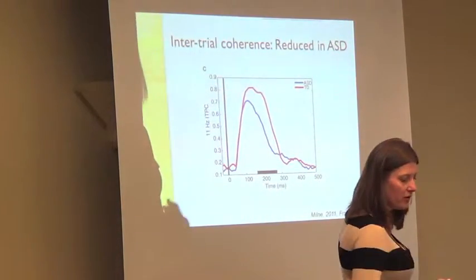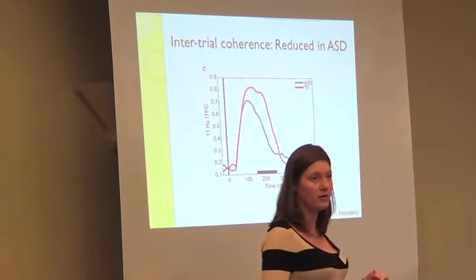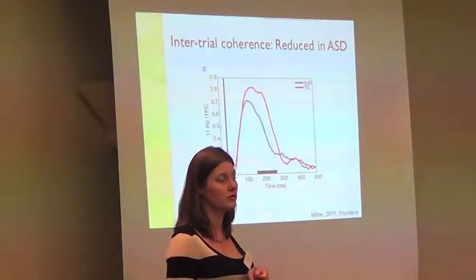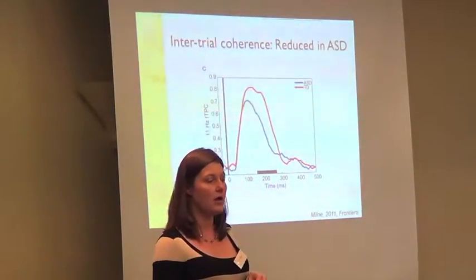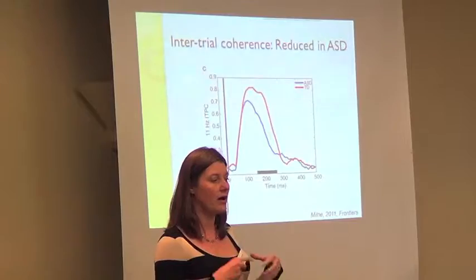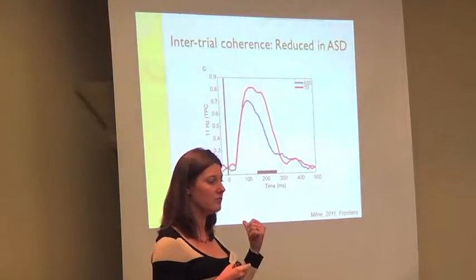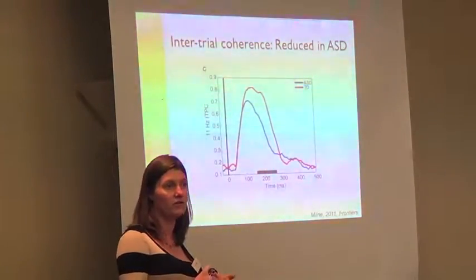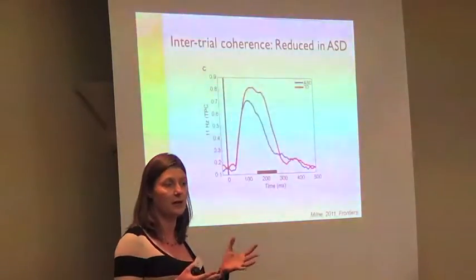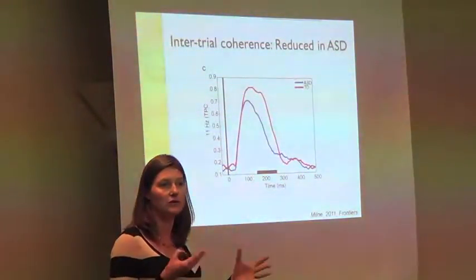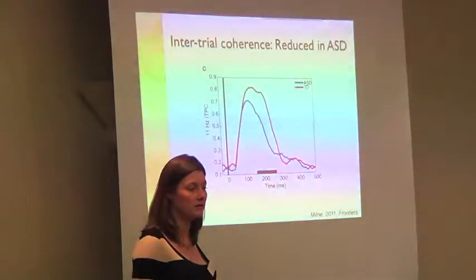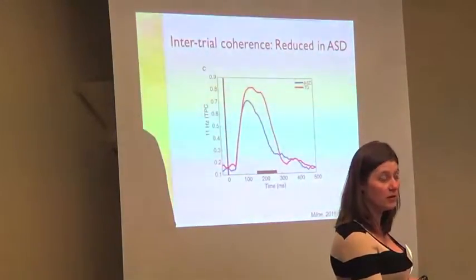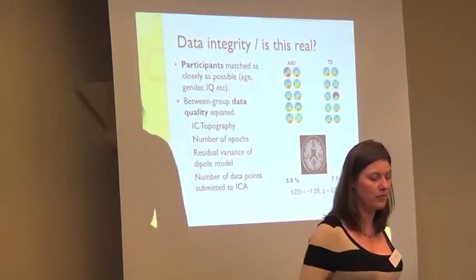So with all three measures — amplitude variability, latency variability, and intertrial phase coherence — I take these data as reliable evidence for increased variability, whether you want to interpret that as neural noise. That's still an open question, but there is evidence for increased variability in participants with autism.